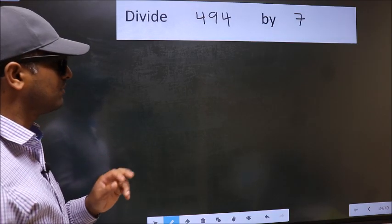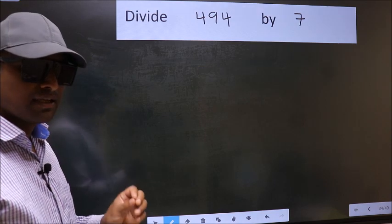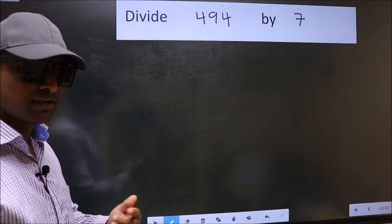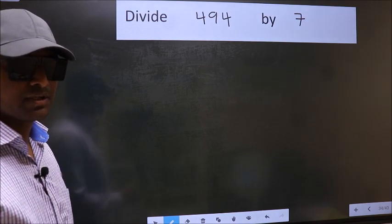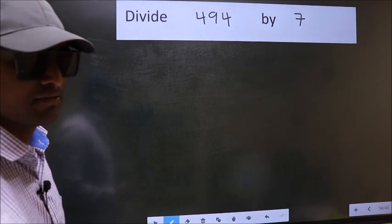Divide 494 by 7. While doing this division, many do this mistake. What is the mistake that they do? I will let you know. But before that, we should frame it in this way.